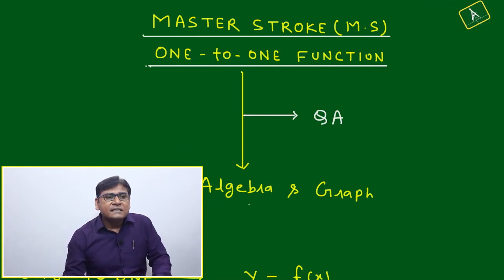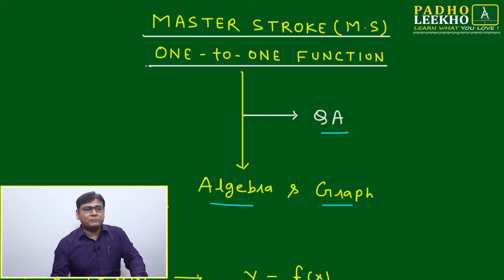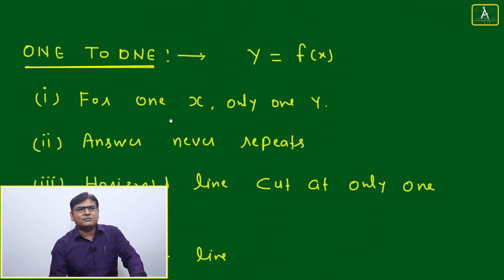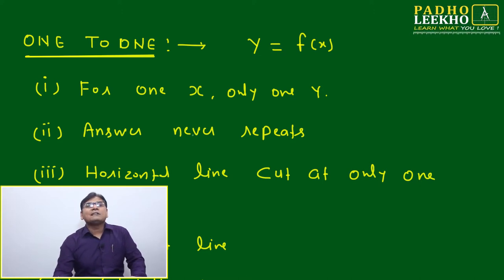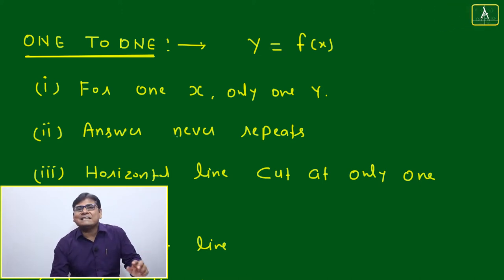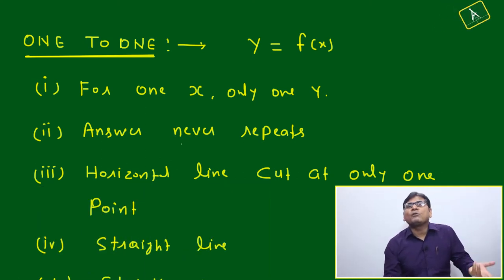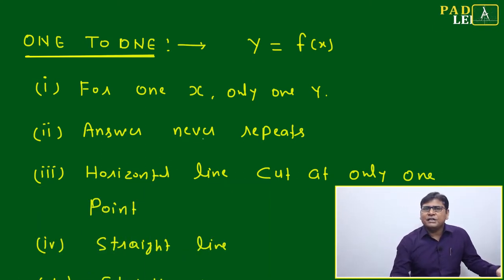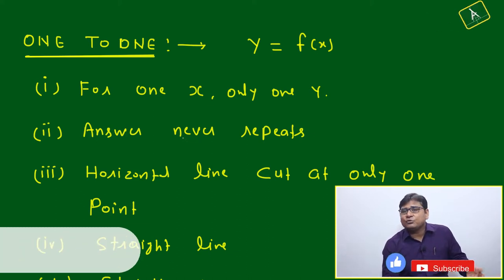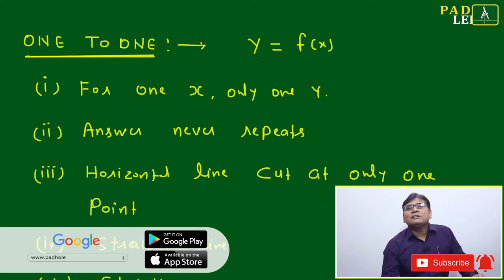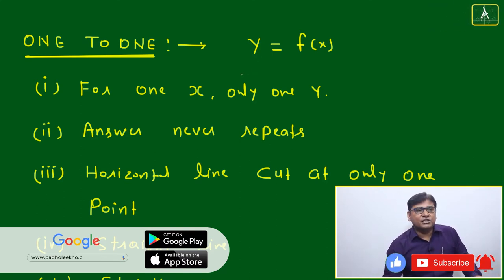This session is related to your algebra and graphs and is going to affect your QA preparation. What is one-to-one function? Just a few theoretical points. We will try to understand what is the one-to-one function, in which cases and which criteria — if any function satisfies them, then we can say it is a one-to-one function. Afterwards, we'll take a few examples and learn through images, and understand the implication and application of one-to-one function.